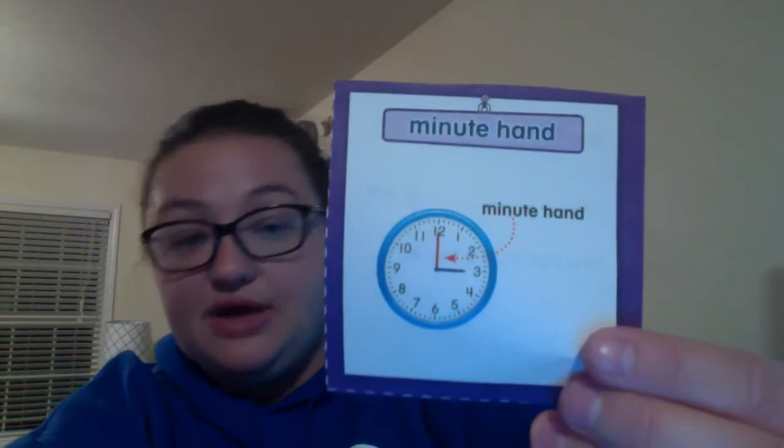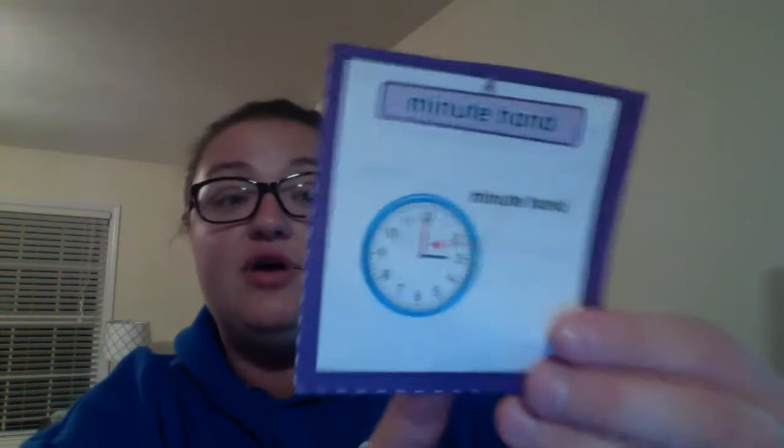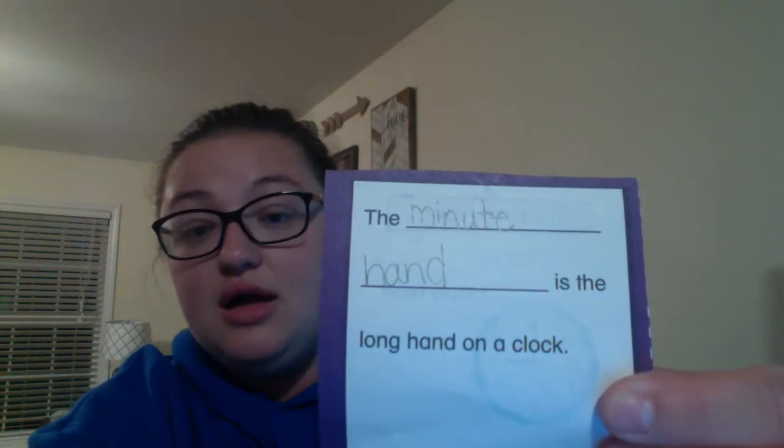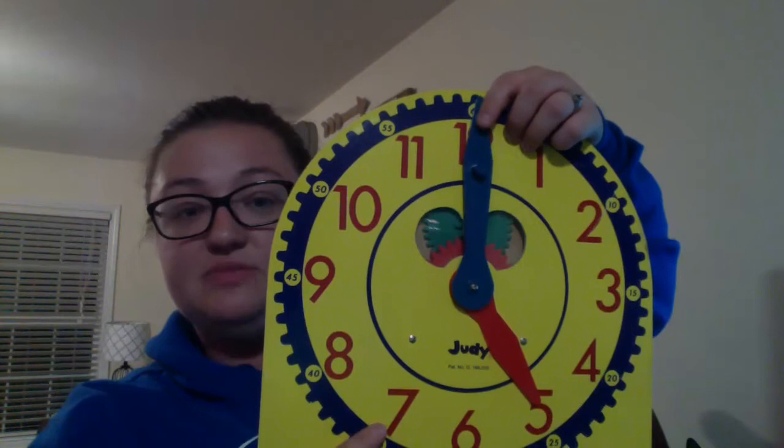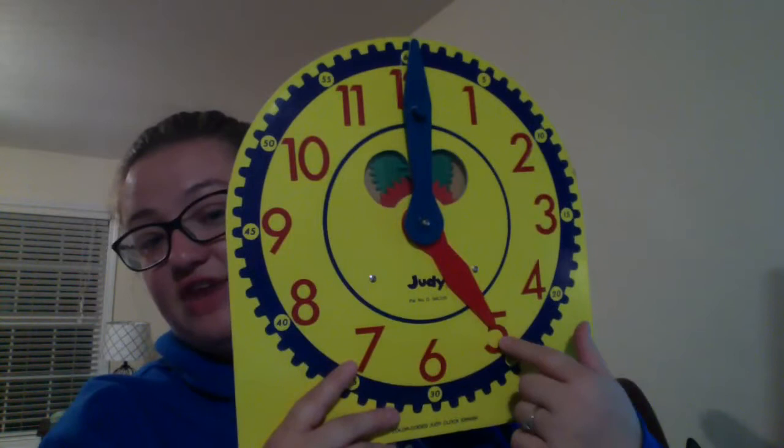The hour hand is the short hand and tells you what the hour is. The next vocabulary word is minute hand. The minute hand is the long hand on the clock. Looking back at our clock, right now it tells me it is five o'clock — five, and if I wrote it digitally it would be 5:00.